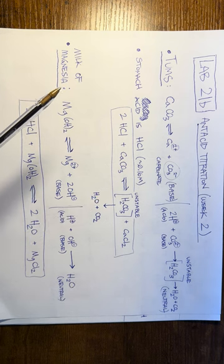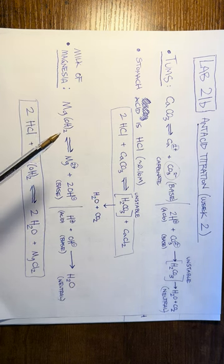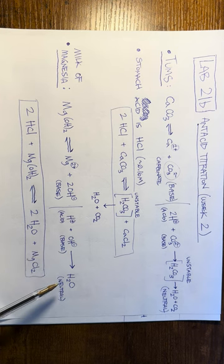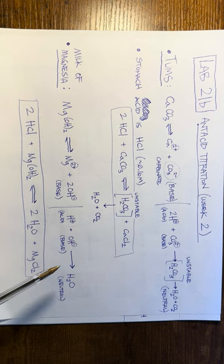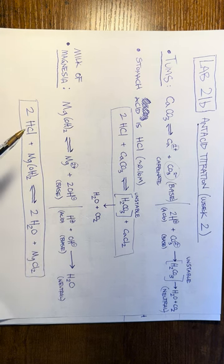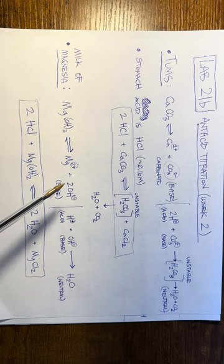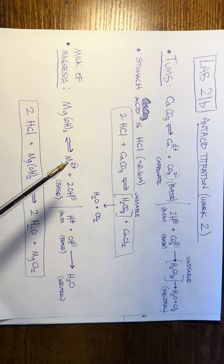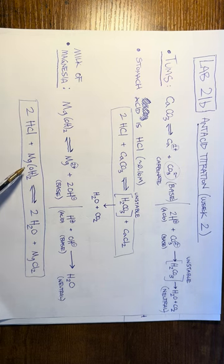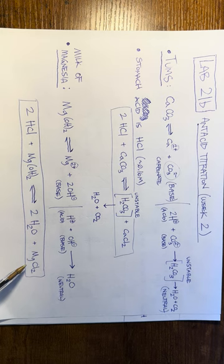Milk of magnesia is magnesium hydroxide, which dissociates into a magnesium cation and two hydroxide anions. These are bases — OH⁻ is a base — and H⁺ plus OH⁻ makes water, which is neutral. So milk of magnesia neutralizes stomach acid because it contains a base. Again, stomach acid is HCl: two moles of HCl react with one mole of magnesium hydroxide, generating two molecules of water and one equivalent of magnesium chloride. These are the balanced reactions for the antacids we're going to study.